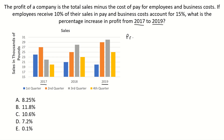Let's figure that out. For our profit, it is the total sales minus the cost of pay for employees and business costs. If employees receive 10% and business costs account for 15%, then our profit must be whatever is left over. So if we do 100% minus 10% minus 15%, that means our profit is 75% of the sales.